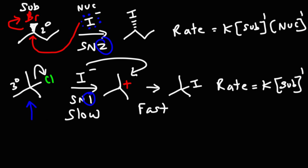When you see the number 2 in SN2, it depends on two things: the concentration of the substrate and the concentration of the nucleophile. When you hear the 1 in SN1, just remember it depends on one thing — the concentration of the substrate. For all of these mechanisms, the rate will depend on the concentration of the substrate.